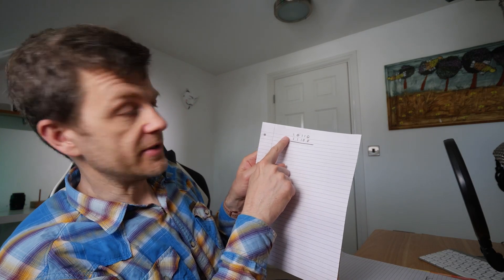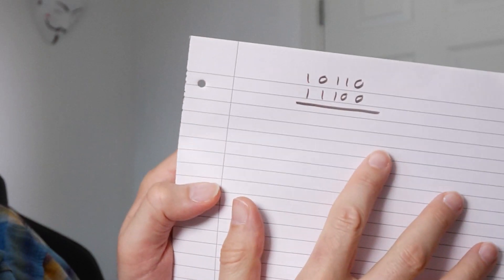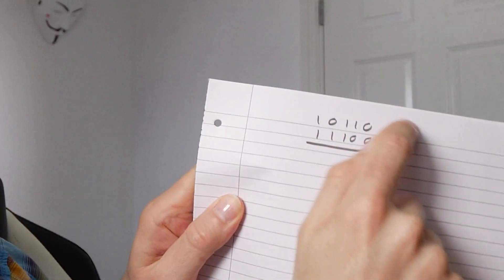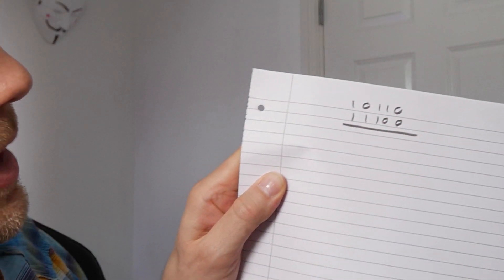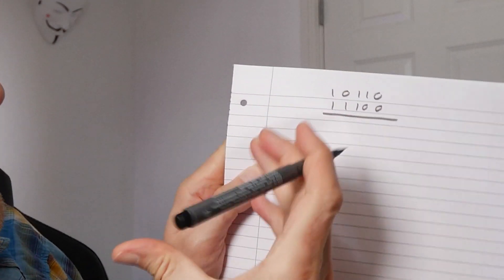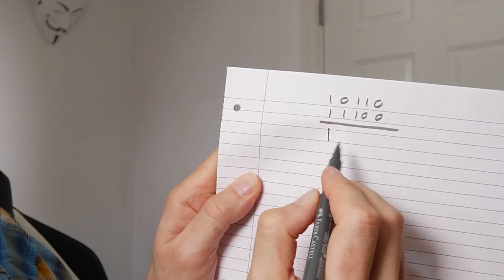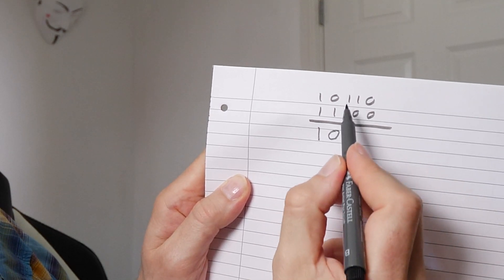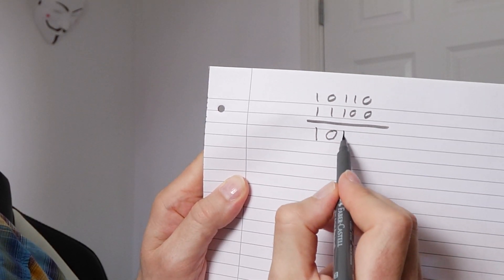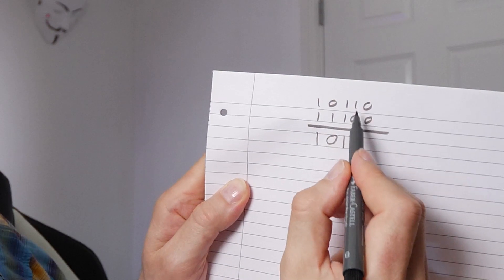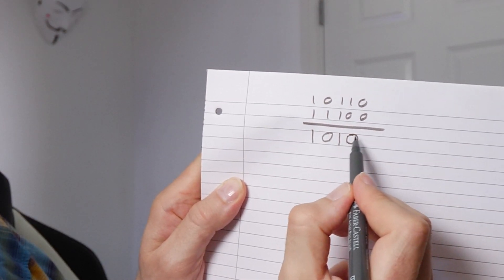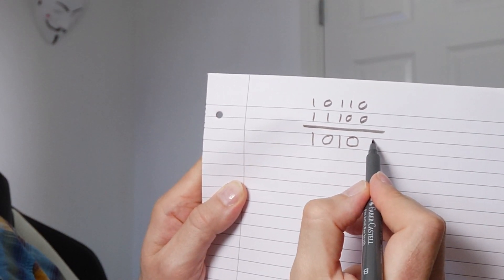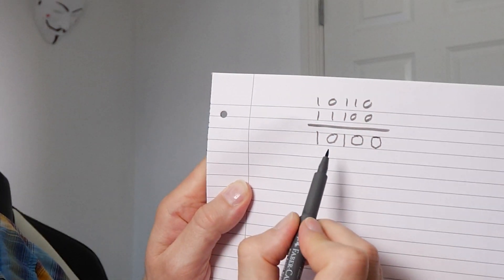So we have, for example, these two binary numbers. If we were to do a bitwise AND operation, where we have one and one, that would return one. Where we have zero and one, that would return zero. We have another one and one there, so that would return one. But here we have one and zero, so that's a zero. And here we have zero and zero, so that returns a zero. So that is how it works.